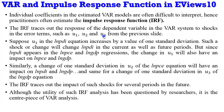Suppose u1 in the PDI equation increases by a value of one standard deviation. What would be the spillover effects to the variables in the VAR system? Such a shock will first of all affect PDI in the current period as well as future periods. But because PDI appears in the PCE and GDP regressions, the shock to the error term will also have impacts on PCE and GDP.